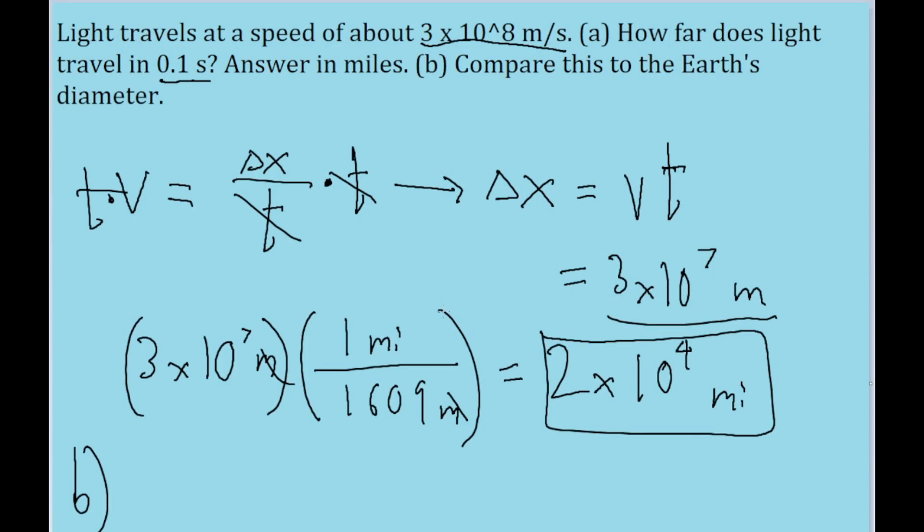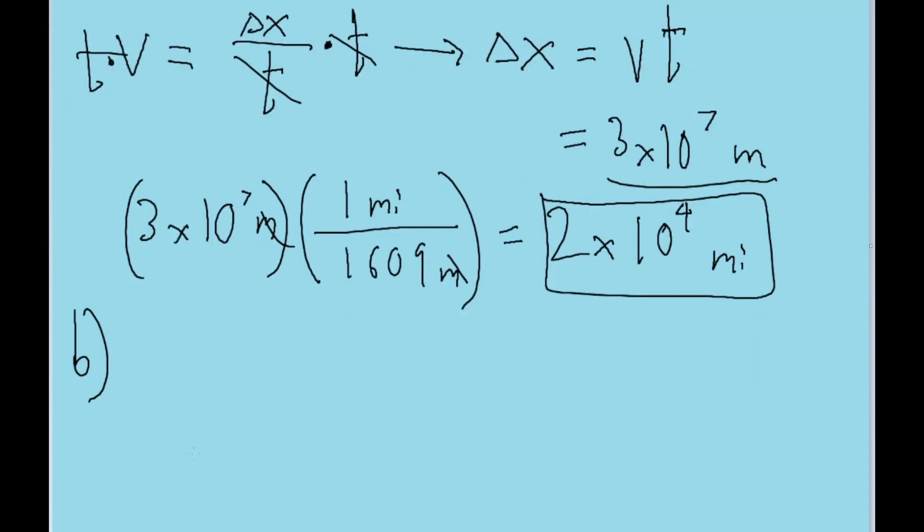And that is the distance we're looking for in the correct units. Now part B of the problem asks us to compare this distance to the Earth's diameter. So what I'm going to do here is I'm going to take the distance we found, and I'm going to divide that by the diameter of the Earth.